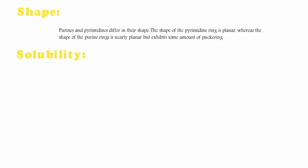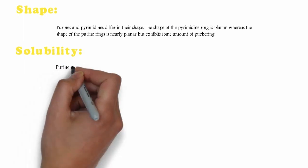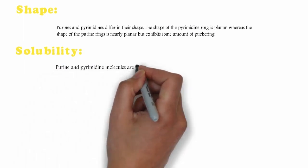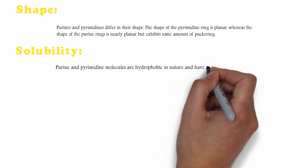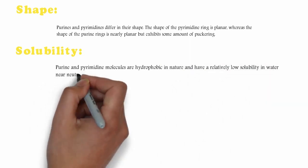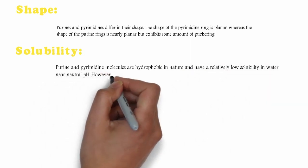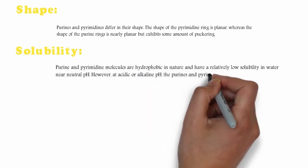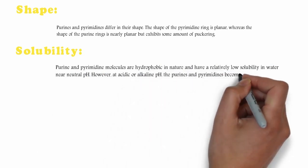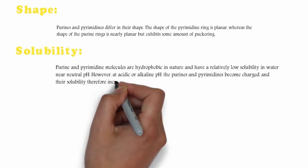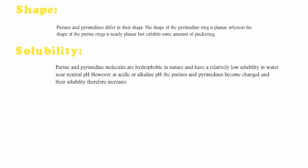Solubility. Purine and Pyrimidine molecules are hydrophobic in nature and have a relatively low solubility in water near neutral pH. However, at acidic or alkaline pH, the Purines and Pyrimidines become charged, and their solubility therefore increases.